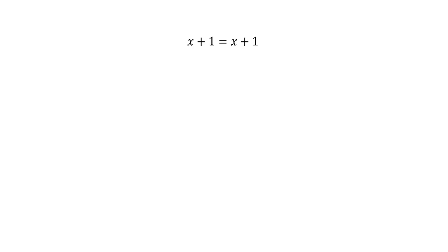Let's go back to some simpler ones — x plus 1 equals x plus 1. Let's go ahead and solve that equation. We want to get x on its own, so we're going to take away the plus 1 from both sides. And then we get x is equal to x. Now we want to get rid of the x from one side, so we subtract x from both sides, and we get 0 equals 0.